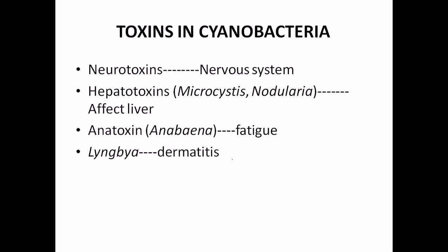Cyanobacteria can produce toxins like neurotoxins or hepatotoxins. Bacteria like Anabaena produce anatoxin, which creates muscle fatigue. Neurotoxins can fatally affect the nervous system and hepatotoxins can affect the liver. While cyanobacteria are mostly useful, their toxin production can cause muscle cramps and other damaging effects.